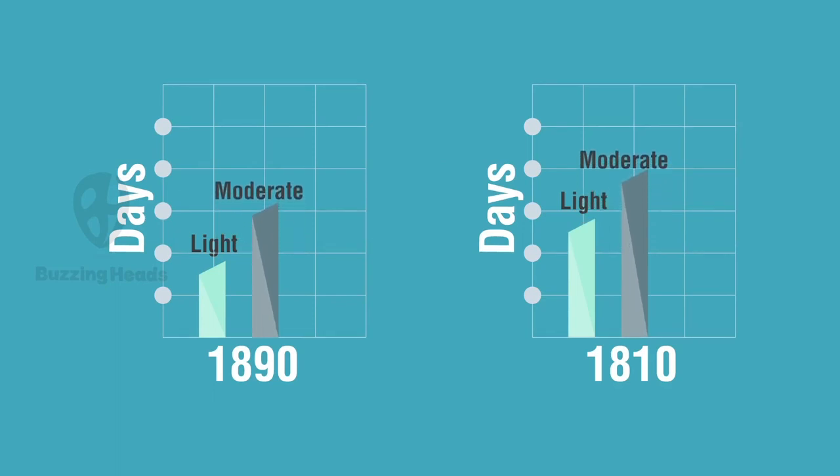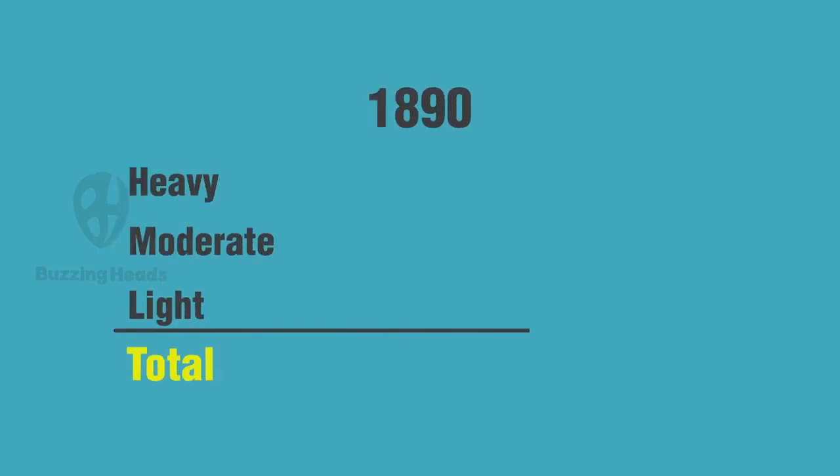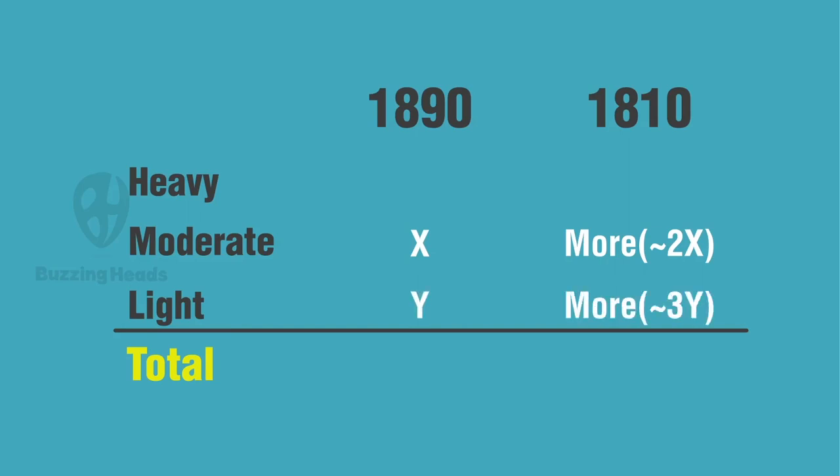Moderate rainfall days were also less in 1890 than in 1810. But the total rainfall days were more in 1890 than in 1810. We can give some random numbers for our understanding of more or less. Let's say moderate rainfall days was x in 1890 and 2x in 1810. We just wanted to show which is higher and which one is lower. Not necessarily does it mean that the moderate rainfall days in 1810 was twice that of 1890.